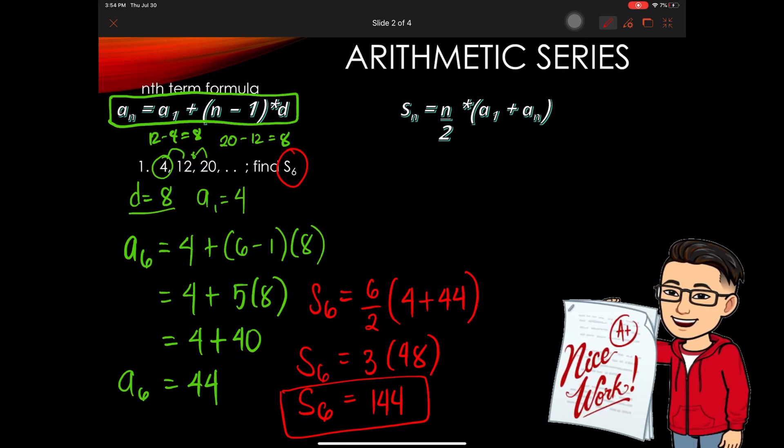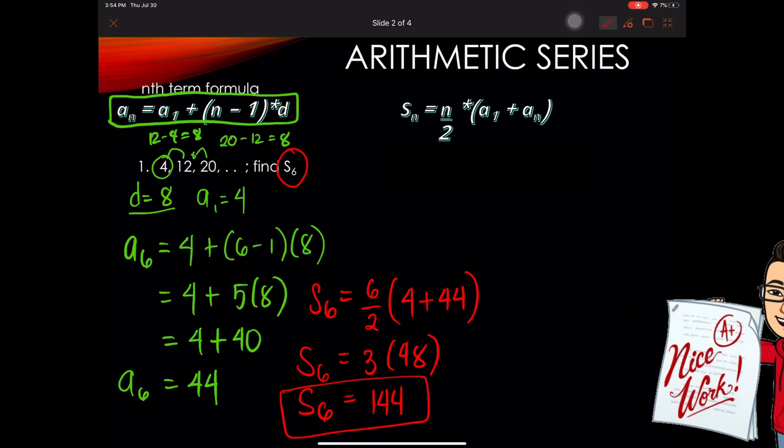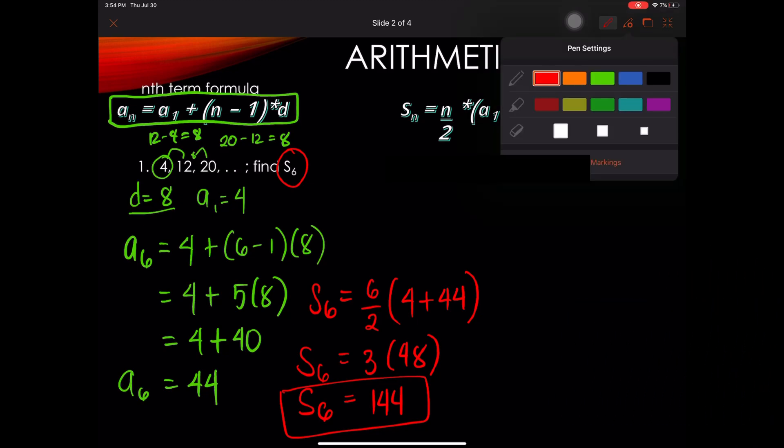Let us check by listing all of them. So if we are going to list all the terms from 4, we have 4, 12, 20, plus 8 is 28, plus 8 is 36, plus 8 will give us 44.